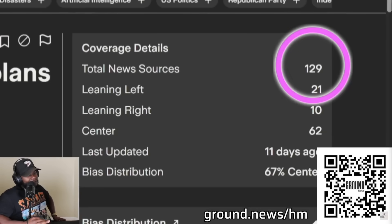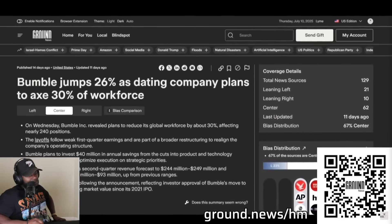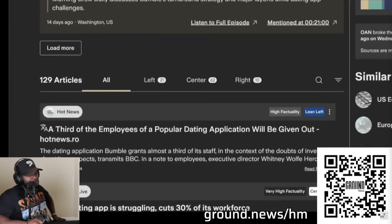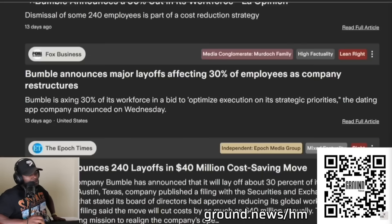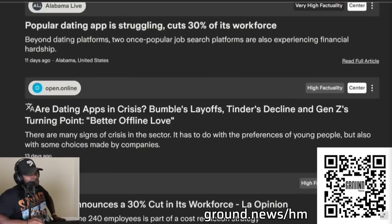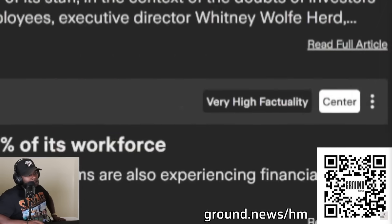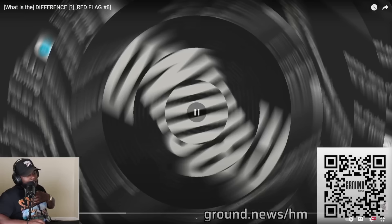But this article about Bumble restructuring because users are sick of it has 129 sources on Ground News and they're all in the center, so it's easy to see this issue actually affects everyone. Ground News shows you who's talking about every story and which way they lean politically so you can spot bias. You can scroll through headlines and see what they're saying at a glance.